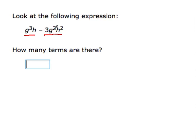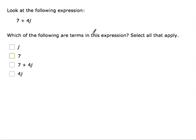Which of the following are terms in this expression? 7 is a term and positive 4j is a term. 7 is listed and so is 4j. Thank you, hope this video helps. Goodbye.